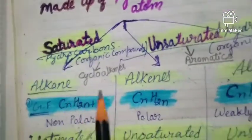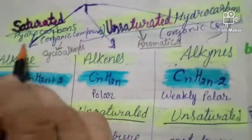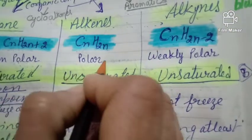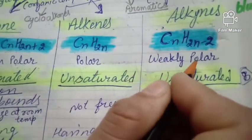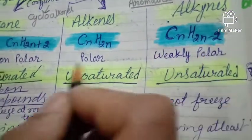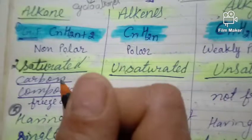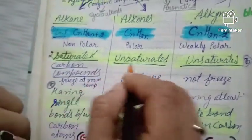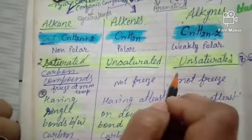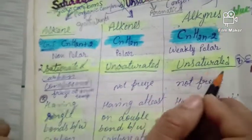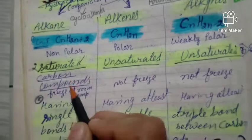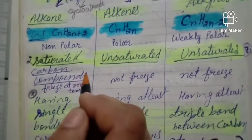Saturated hydrocarbons are non-polar in nature, while unsaturated hydrocarbons are polar or weakly polar. Saturated hydrocarbons are solid (freeze) at room temperature, but unsaturated hydrocarbons do not freeze at room temperature.